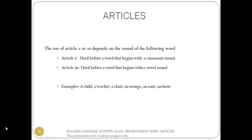The use of article a or an depends on the sound of the following word. Article a is used before a word that begins with a consonant sound. Article an is used before a word that begins with a vowel sound. Examples: a child, a teacher, a chair, an orange, an aunt.